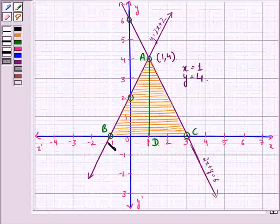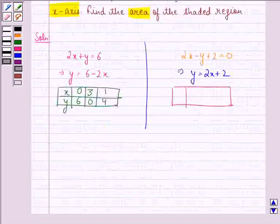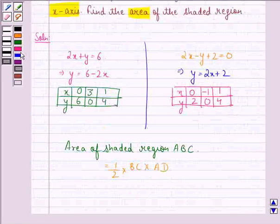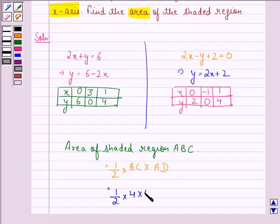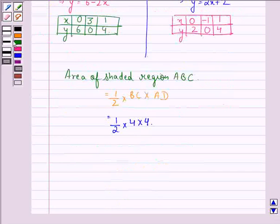Now, from the graph, we see that BC is of measure 4 units, AD is of measure 4 units. So this is equal to half of 4 into 4, that is equal to 8 square units.